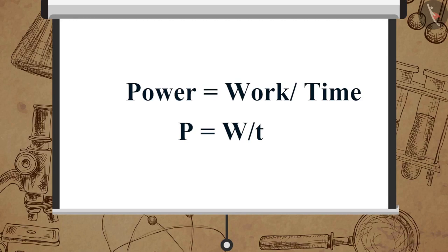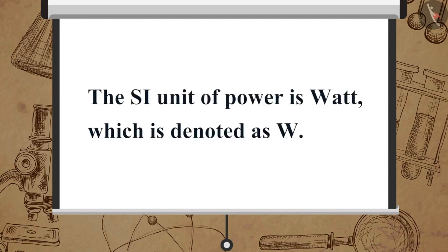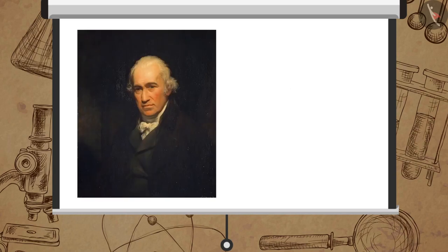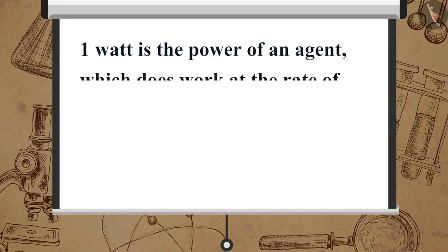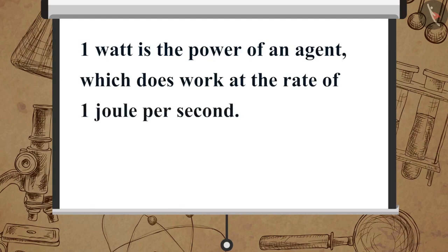The SI unit of power is watt, which is denoted as W. The SI unit is named watt to honor the Scottish inventor James Watt. One watt is the power of an agent which does work at the rate of one joule per second: 1W = 1J/1s = 1 joule per second.